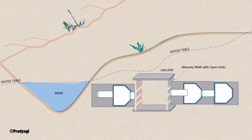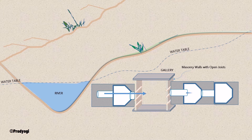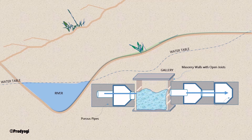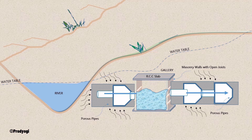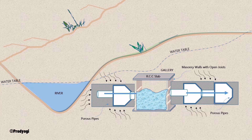This is the general arrangement of infiltration galleries. The water is allowed to percolate into the gallery by means of gravitational flow. In order to permit water to enter the gallery, the construction is made with open joints so that the water enters easily into the gallery.